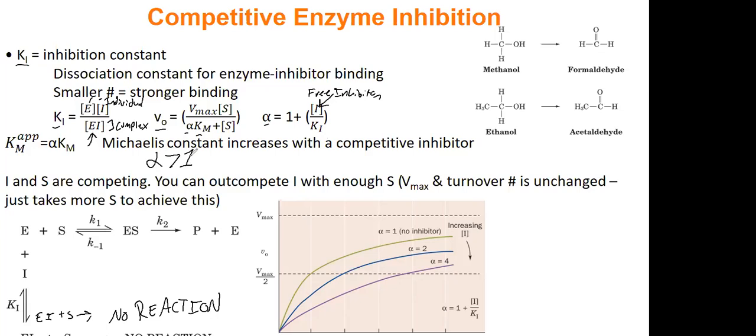And we actually have a term for this alpha Km. We call it Km apparent, or the apparent Michaelis constant. And alpha will always be a value greater than one. And because what a competitive inhibitor does, is that it increases Km, but does not change Vmax. So Km will increase, Vmax, no change. Right?